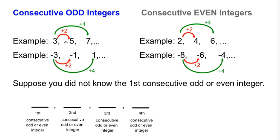So you'll notice a pattern that to go from the first consecutive odd integer to the next, you would simply add 2. 3 plus 2 gives you 5.